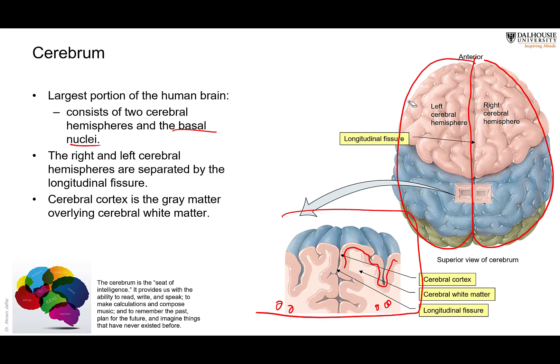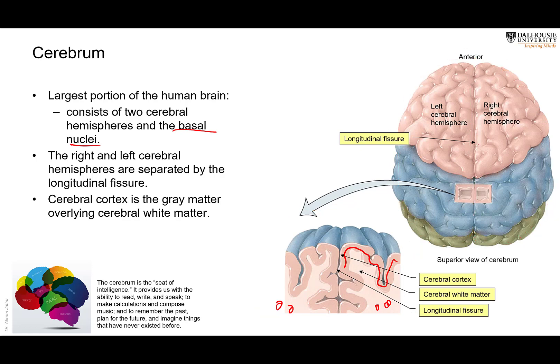The two cerebral hemispheres are separated from each other by a fissure called the longitudinal cerebral fissure. If you have a dissected brain, you can see that you can separate between them — it's a very deep fissure.